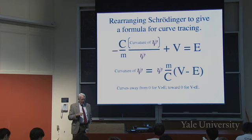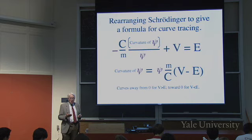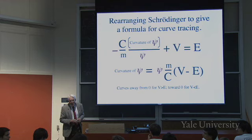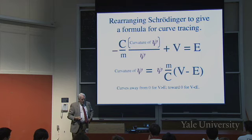The curve curves away from zero when the potential energy is greater than the total energy. The potential energy being greater than the total energy means the kinetic energy is negative, and the curve curves away from the baseline — which is dangerous because it'll keep going to infinity. And that's not allowed; it has to not go to infinity.